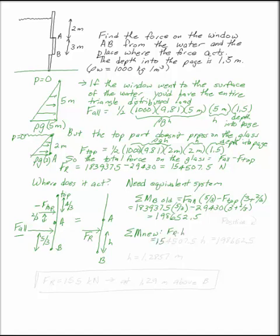On my new system, all I have is fr times h, and fr we found at 154507.5 times h. As long as I define these as being positive in the same direction, so I'm taking the moment at B positive clockwise, then I can set one of them equal to the other number and solve for h. h is 1.2857 meters.